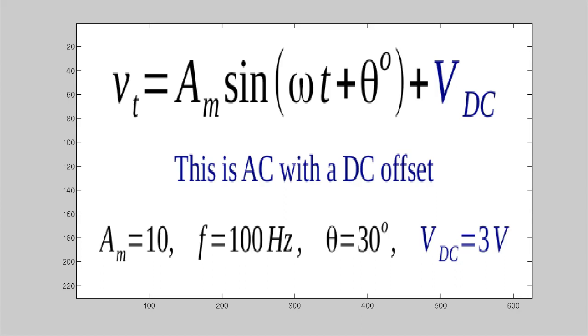In this example we are looking at a sine wave with a DC offset. So we've got sin omega t, that's our oscillating wave with an amplitude of A max, we have the phase shift theta, now we have a DC offset.